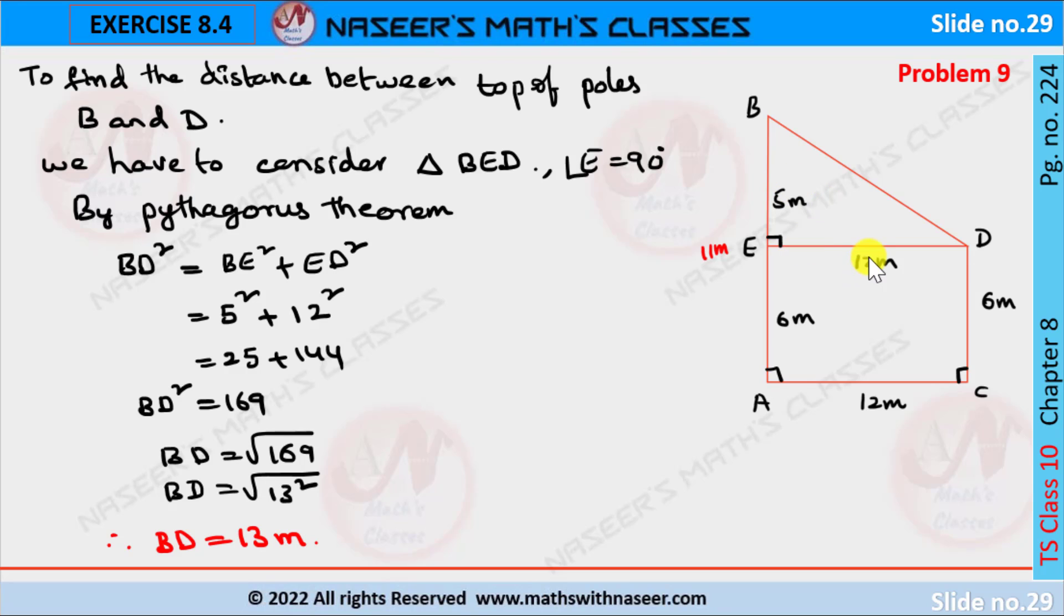Here BE value is 5 meters and ED value is 12 meters. We substitute these values. We get 5 squared plus 12 squared. 5 squared is 25, 12 squared is 144. By adding this, we get 169. BD squared equals 169.